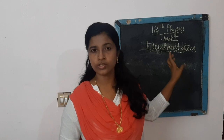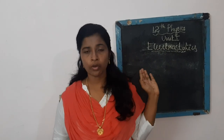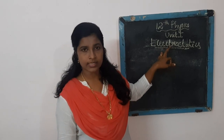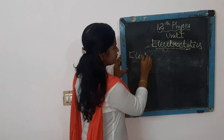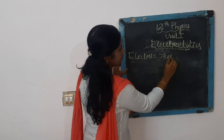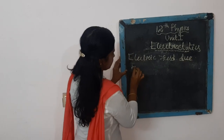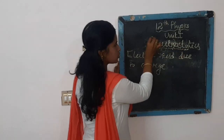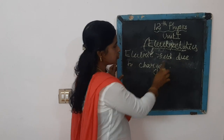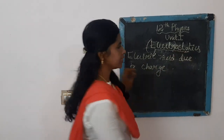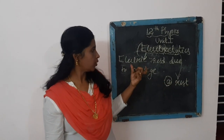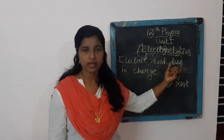It was found out experimentally by the scientist Coulomb. Before entering into this unit, let us discuss what is meant by electrostatics. 'Electro' means electric field due to charge, and 'statics' means at rest. So we are going to study about the electric field due to charge at rest.